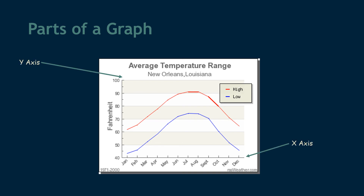Now let's go through an example of the parts of a graph using the same line graph we were looking at earlier. We can see the axes — the x-axis on the bottom and the y-axis on the side. For labels, on the y-axis we have degrees Fahrenheit, showing temperature. This graph is not ideal because there is no label on the x-axis — it should say 'months of the year.' It's pretty obvious, but it should still have a label.